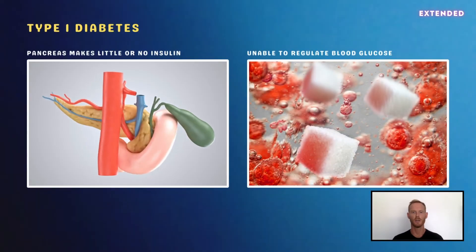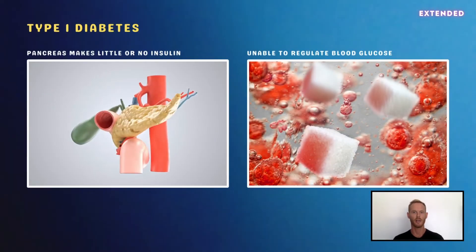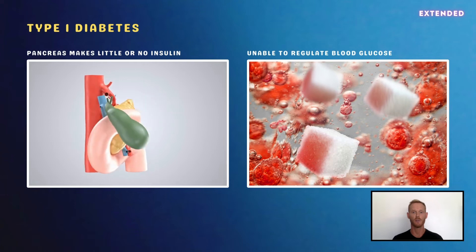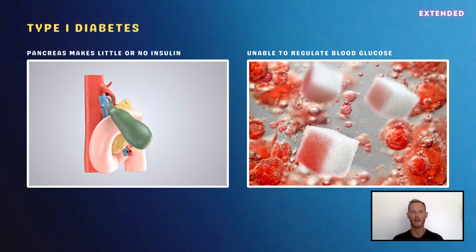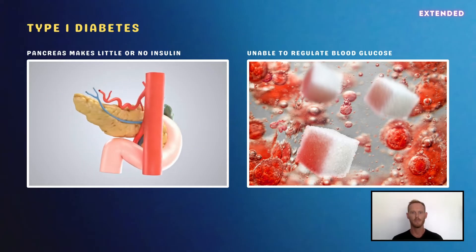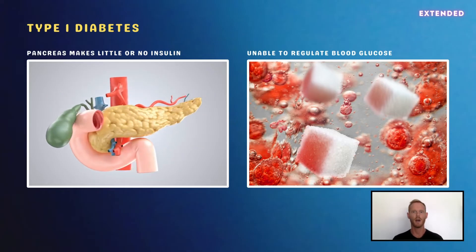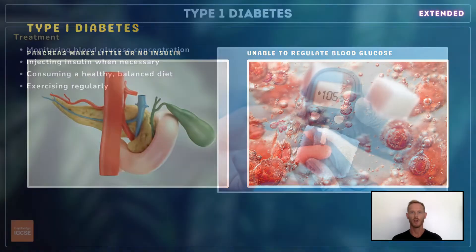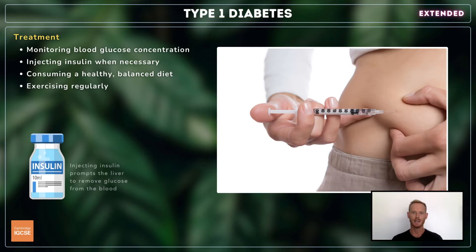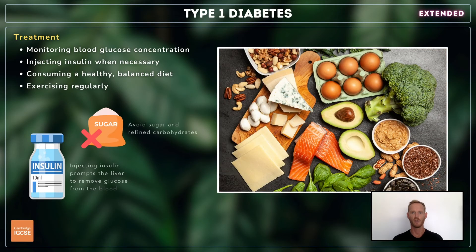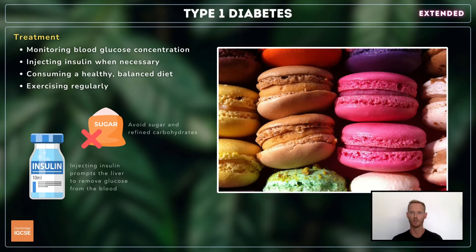Next, you need to outline the treatment of type 1 diabetes, a chronic condition characterised by the sufferer's inability to regulate blood glucose, due to a lack of insulin production by the pancreas. This results in elevated blood glucose levels, which can be harmful if left unchecked. Type 1 diabetes can be treated by regularly monitoring the blood and injecting insulin whenever blood glucose levels are too high. It's also important for those suffering with the condition to maintain a healthy diet, as refined carbohydrates and sugar cause large spikes in blood glucose.